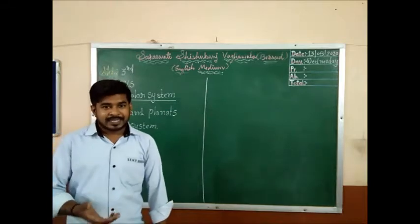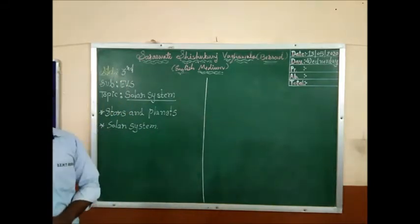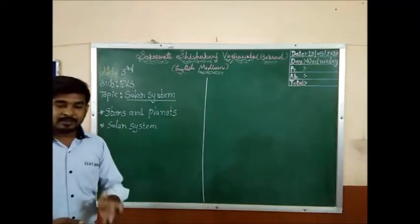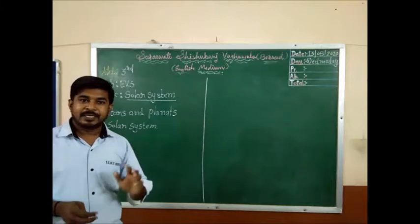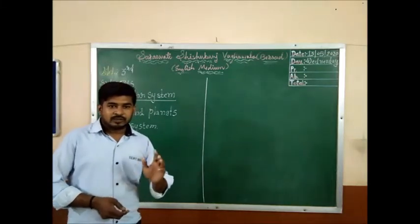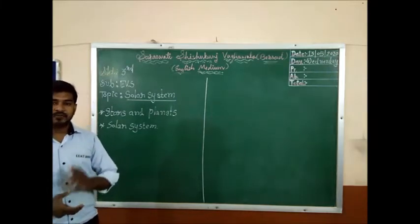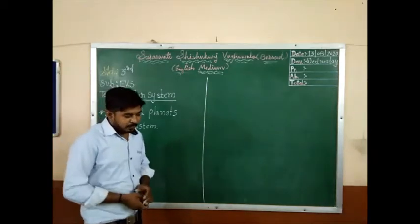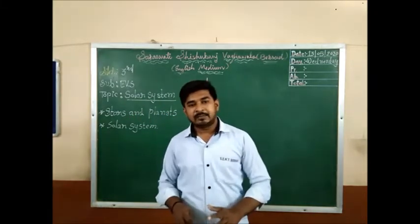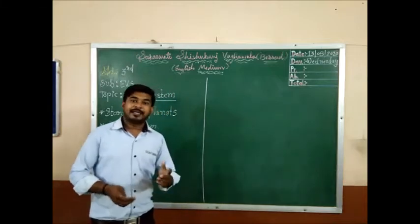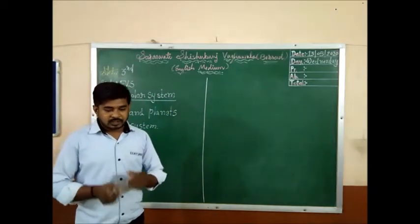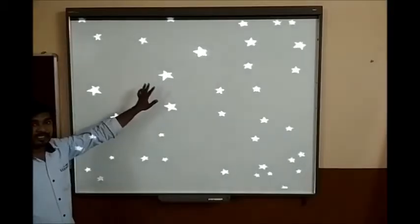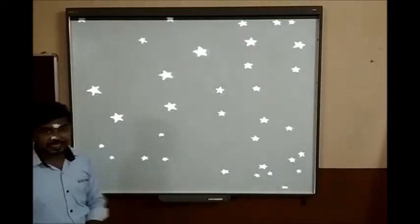So, have you seen the dark sky at night? In the dark sky at night there are so many points of light — those that are twinkling, and some points that do not twinkle but remain static. The points of light which are twinkling are stars, and the points of light that do not twinkle but remain static are planets.